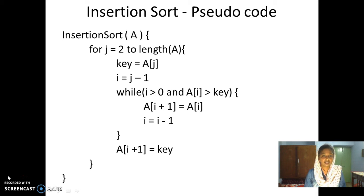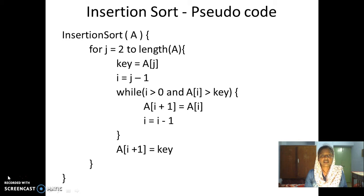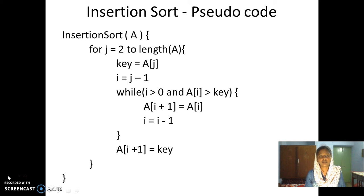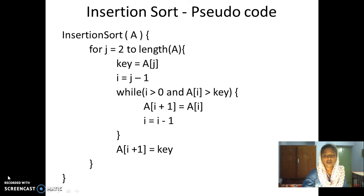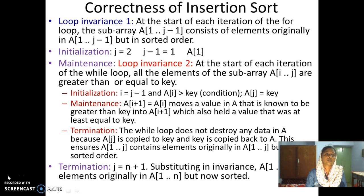Just because we have written this, we need not say that it is correct. We can work out an example as we did before to verify correctness of the algorithm, but that is not the formal way of doing it. It might work for one example but may not work for another. So there should be a way to formally prove that these steps are indeed sorting the input. For that, we are going to use something called loop invariance.